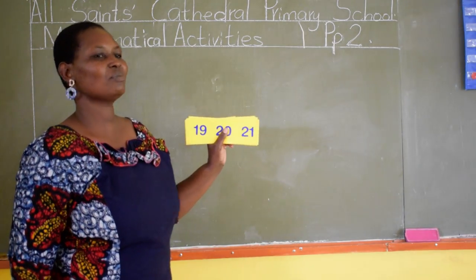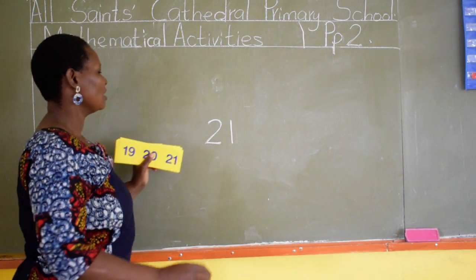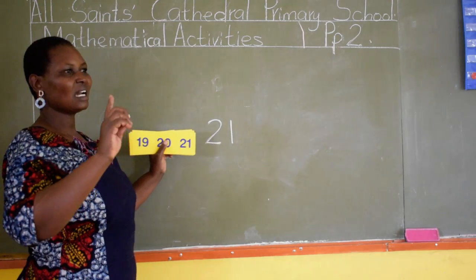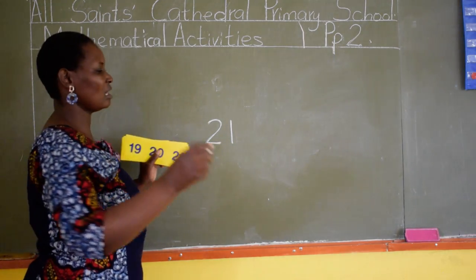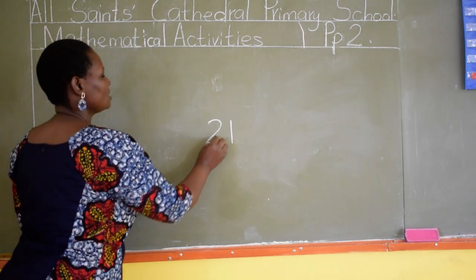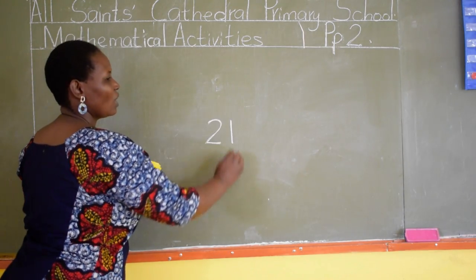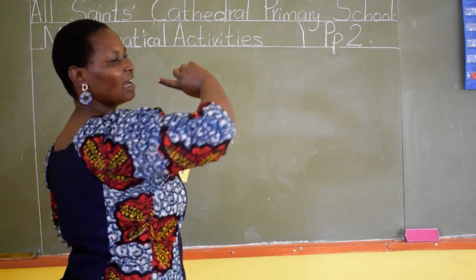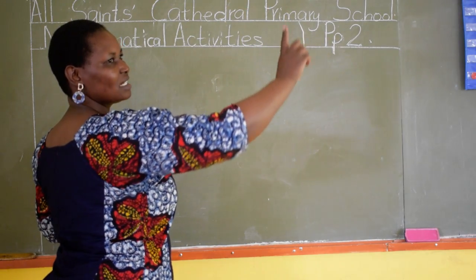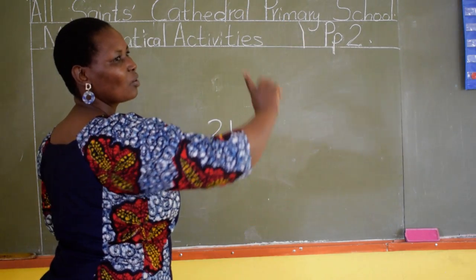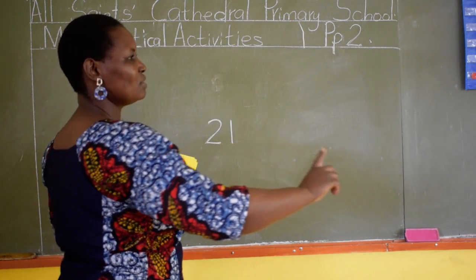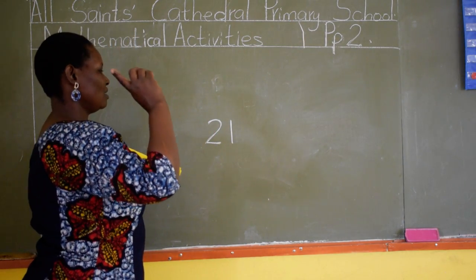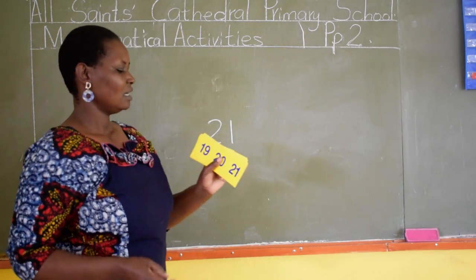When you are writing, you write as you say the number. 21. Let us write 21 in the air. 21. So that you don't confuse it with number 12.